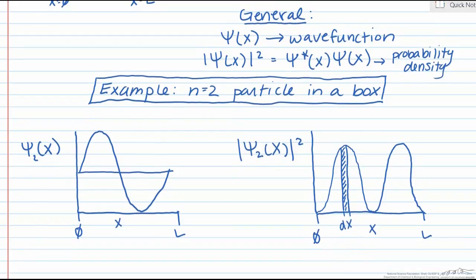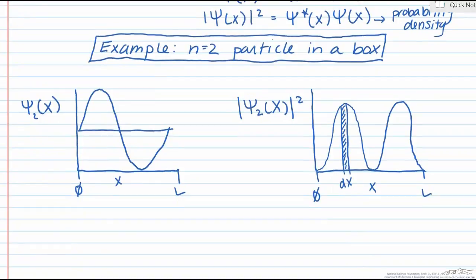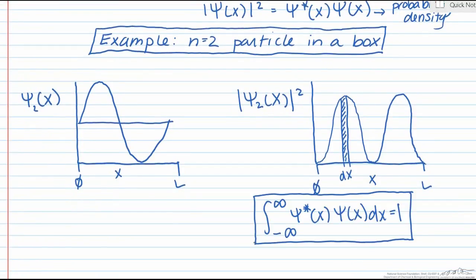We know that our particle has to be somewhere. So if we sum up all of the probabilities over all of space, the probability should sum to 1, or 100%. In general, we can use this fact to solve for the normalization factor of any given wave function.